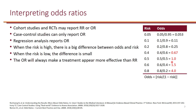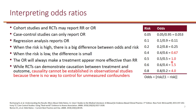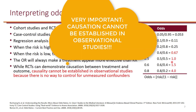While randomized controlled trials can demonstrate causation between treatment and outcome, causality cannot be established in observational studies. When you look at the results of observational studies, they can only show association — they can never establish causality. This is extremely important to keep in mind when interpreting odds ratios and relative risks.